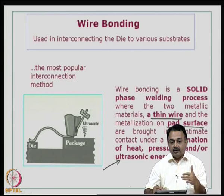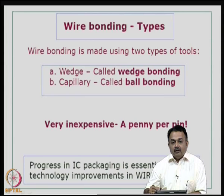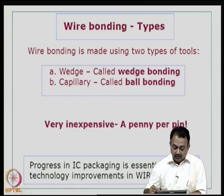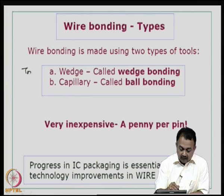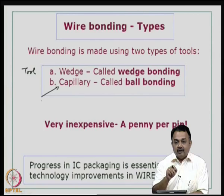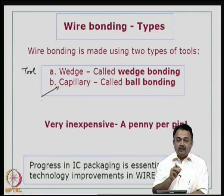Wire bonding is of two types: one is known as wedge bonding, and the other is known as ball bonding. The wedge bonding uses a wedge tool. Here in the ball bonding process, you use a capillary where you can draw thin wires. The wire diameter depends on the space availability and the area available. If you are using a chip on board directly, you may have more area to utilize, but if it is in a package on a lead frame then you have to be very critical in choosing the diameter.